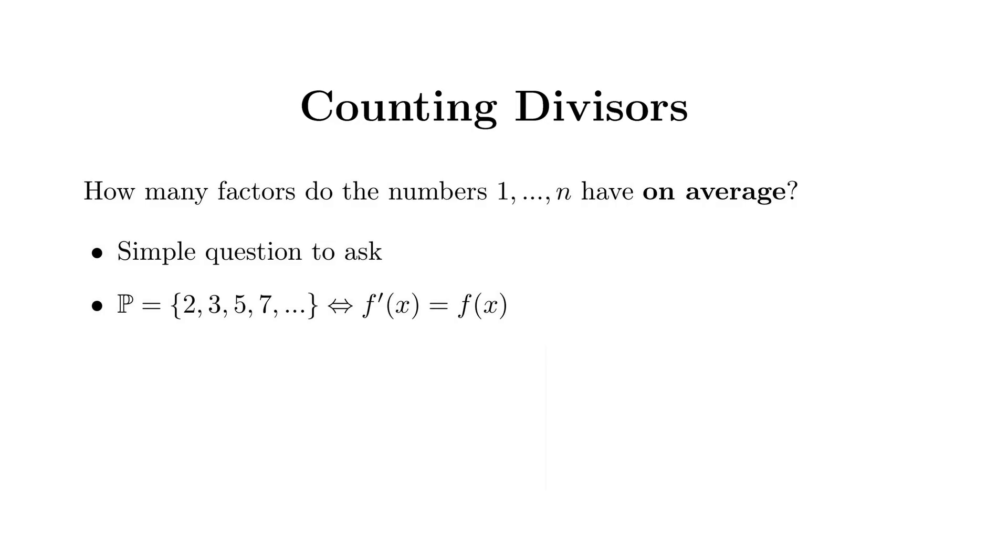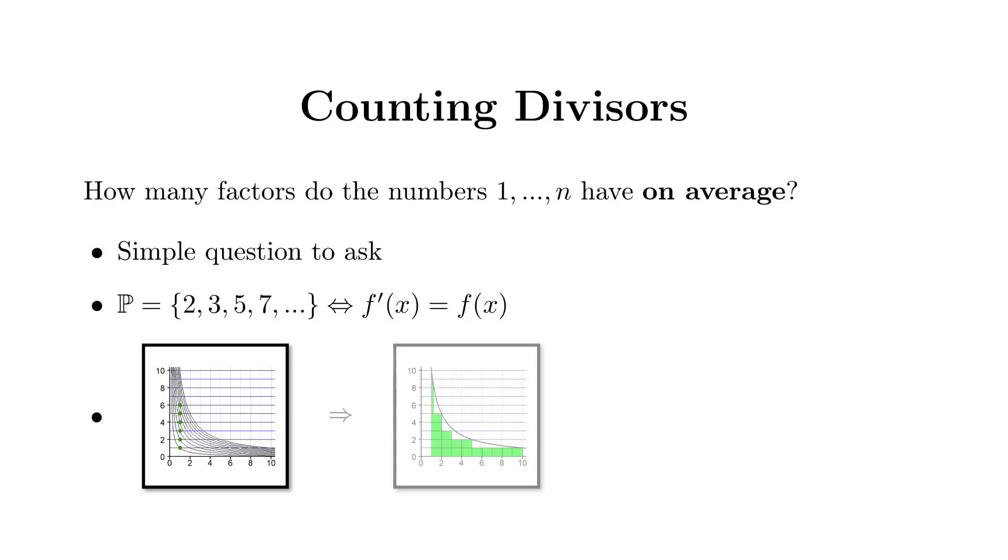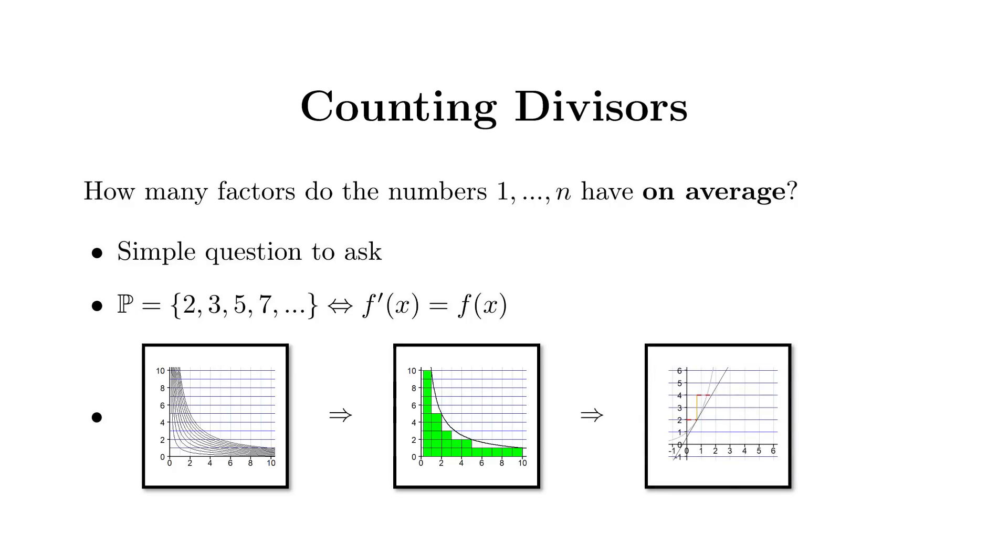So, the general question we will tackle is to find a formula which approximates how many factors the numbers from 1 to n have on average. I love this problem for three reasons. First, everyone knows what divisors are, making it not only a simple question to understand, but also many people have at least some sort of intuition for it. Second, it shows how very different fields in mathematics can work together. In this case, number theory, which often deals with studying prime numbers, and analysis, where Euler's number was born. Last, every single step of the solution can be visualized easily, therefore avoiding dry calculations and making it more accessible. That being said, let's dive right in.